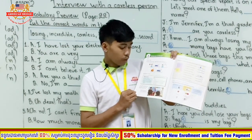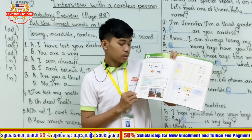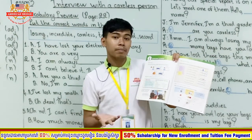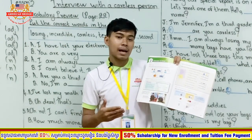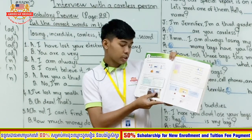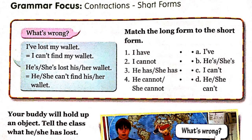Look at the grammar focus on contractions — short forms. For example, 'I am' becomes 'I'm,' 'I have' becomes 'I've' (I apostrophe v e). Look at the picture: match the long form to the short form. Number one: 'I have' — letter A, 'I've.' Number two: 'I cannot' — 'I can't.' Number three: 'he has' or 'she has' — letter B, 'he's' or 'she's.' Number four: 'she cannot' or 'he cannot' — 'he can't' or 'she can't.' Remember: the short form of 'cannot' is 'can't.'